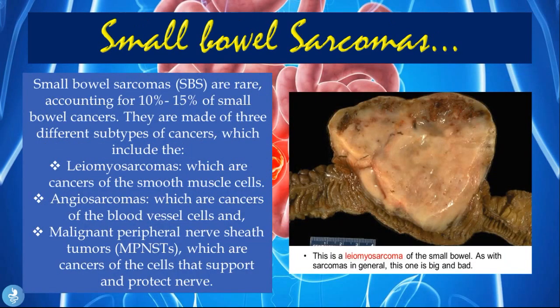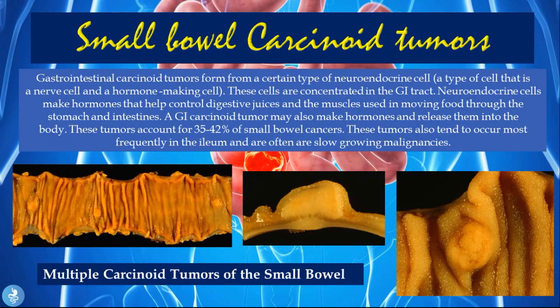Small bowel sarcomas are rare, accounting for only 10 to 15 percent of small bowel cancers. They are made up of three subtypes: leiomyosarcomas, which are cancers of smooth muscle cells; angiosarcomas, which are cancers of blood vessel cells; and malignant peripheral nerve sheath tumors, which are cancers of the cells that support and protect nerves. The picture shows an example of a leiomyosarcoma of the small bowel, a tumor comprised of smooth muscle cells.